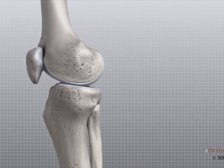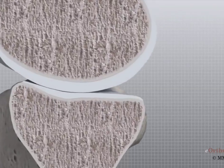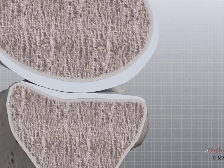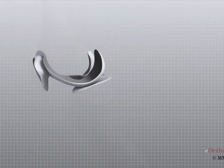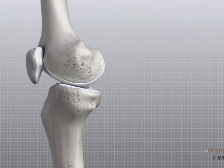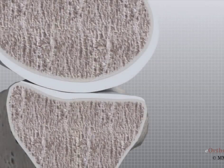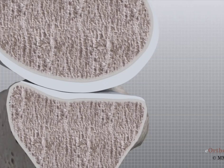Articular cartilage is the material that covers the ends of the bones of any joint. This material is about one quarter of an inch thick in most large joints. It is white and shiny with a rubbery consistency. Articular cartilage is a slippery substance that allows the surfaces to slide against one another without damage to either surface. Its function is to absorb shock and provide an extremely smooth surface to facilitate motion. We have articular cartilage essentially everywhere that two bony surfaces move against one another or articulate.